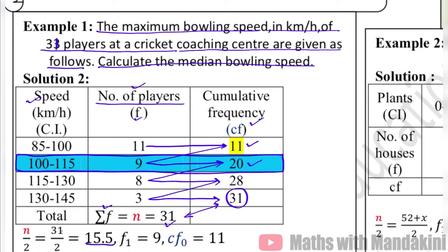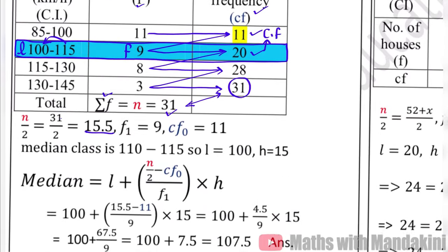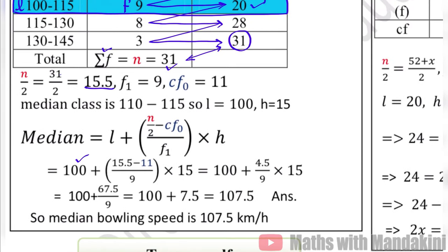Once the median class is selected, we identify L (lower limit), F (frequency of median class), CF (cumulative frequency of the preceding interval), and h (class size = 115 minus 100). Substituting all values into the median formula, we get the median bowling speed as 107.5 km per hour. This is how we calculate median for grouped data.